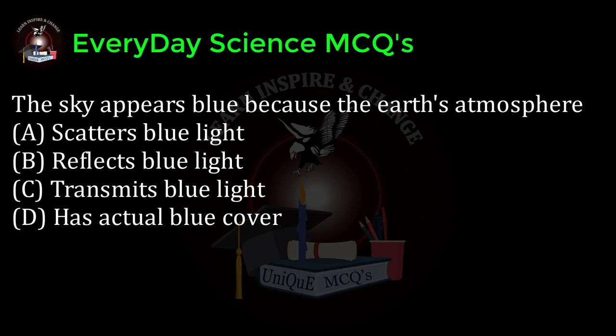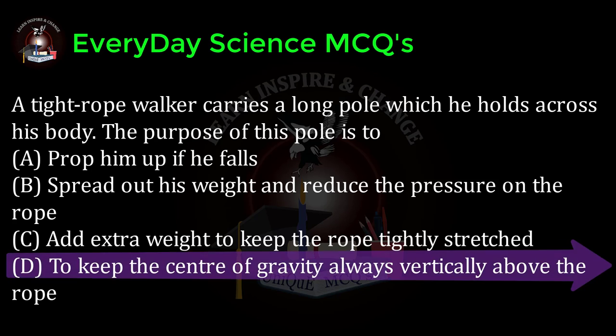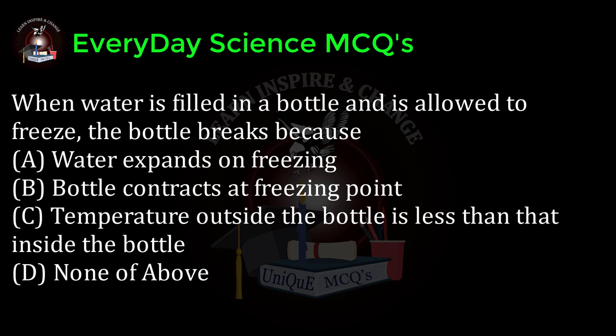Correct answer: a. A tightrope walker carries a long pole which he holds across his body. The purpose of this pole is to: a) prop him up if he falls, b) spread out his weight and reduce the pressure on the rope, c) add extra weight to keep the rope tightly stretched, d) keep the center of gravity always vertically above the rope. Correct answer: d.